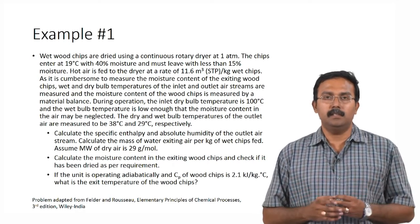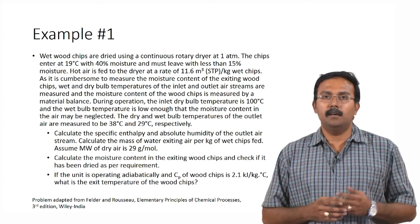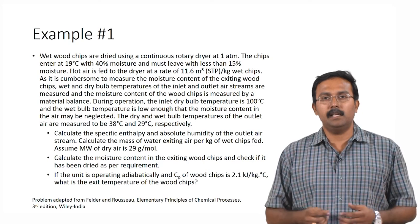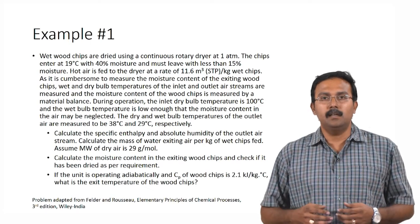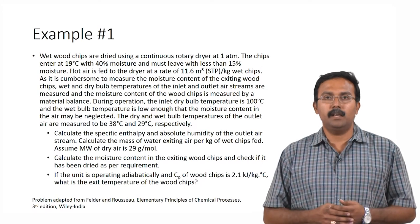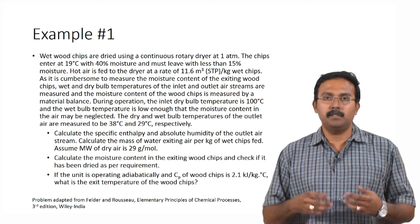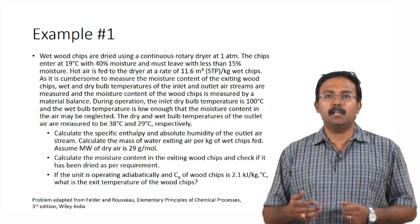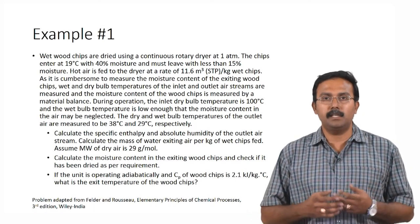This is a very practical problem because measuring moisture content in wood chips directly would be very tedious, requiring analytical techniques that take a lot of time. Instead, by measuring the dry and wet bulb temperatures you can identify how much moisture is present in the air leaving the system, then perform a simple material balance to find the moisture content in the wood chips and confirm it meets the specification of less than 15%.